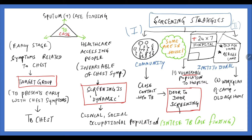Screening strategies are dynamic. One is to directly go to the community — door-to-door screening. Next, because many people live in institutions such as old age homes, refugee camps, or workplaces, there is an institutional screening strategy. In the community we do door-to-door; in institutions, we screen whoever is present there including vulnerable populations like close contacts.